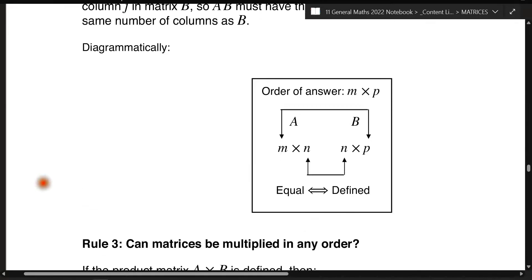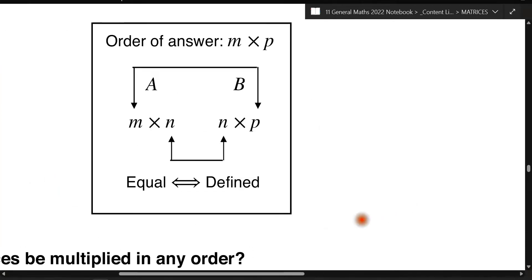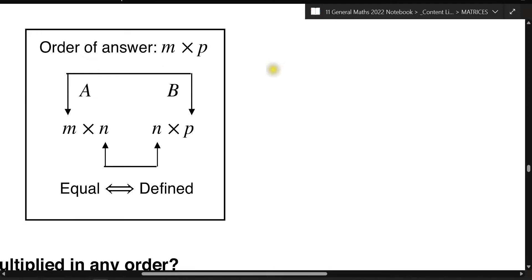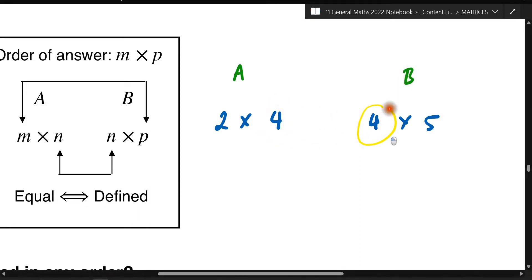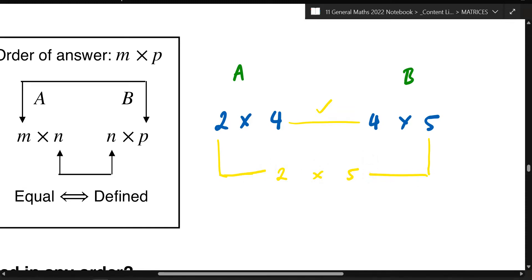Here's another example: let's say matrix A is a 2×4 and matrix B is a 4×5. Because the column of A and the row of B are both 4 — the same — you can multiply them together. And your answer, after you multiply all the values, is going to be a 2×5 matrix — two rows and five columns.